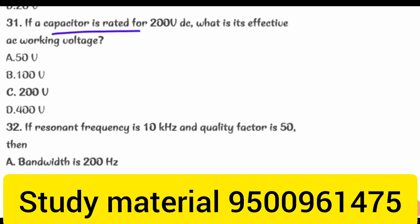If a capacitor is rated for 200 V DC, what is its effective AC working voltage? 200 V.